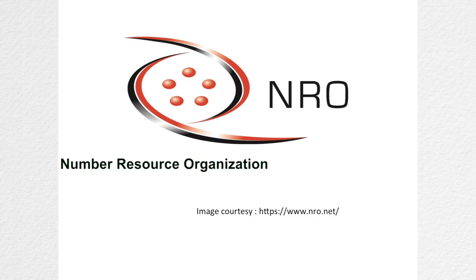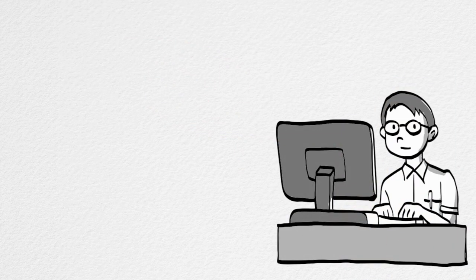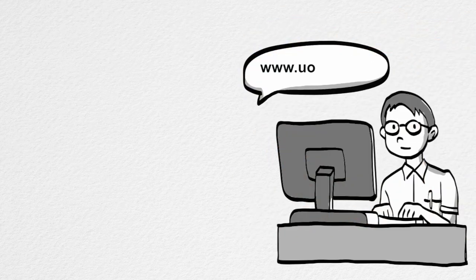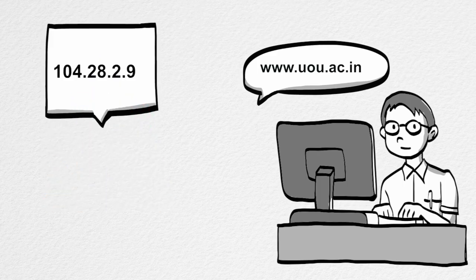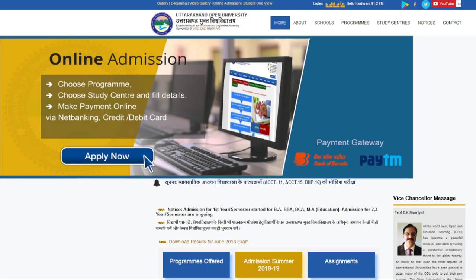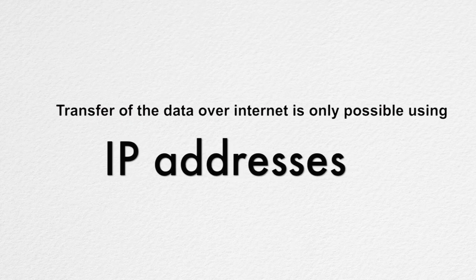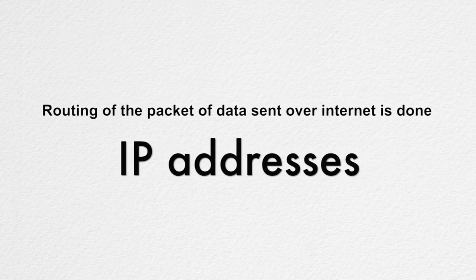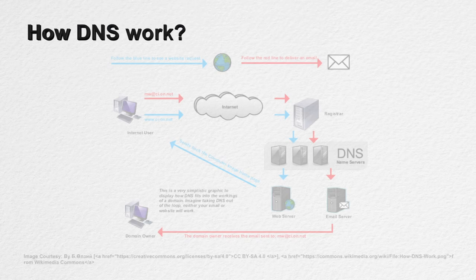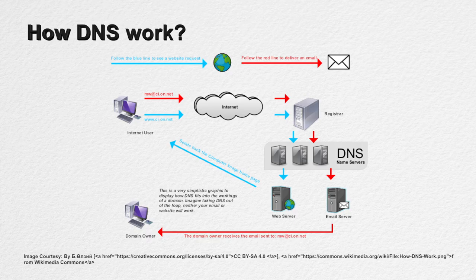For licensing and coordination between these five RIRs, there is an organization called the Number Resource Organization or NRO. Whenever we browse any website on the internet, we type names such as www.uou.ac.in; we rarely deal with IP addresses like 104.28.2.90. But the fact is, even if we type the IP address in the URL, it will land us on the same web page. We are very comfortable using and remembering names instead of numbers. Moreover, IP addresses change over time and some sites have multiple IP addresses. The transfer of data over the internet is only possible using IP addresses because routing of data packets is done using IP addresses. There is a server called the Domain Name System or DNS which takes care of this translation to save us from remembering these changing IP address numbers.